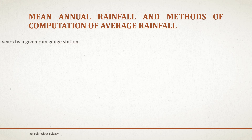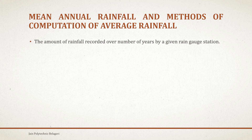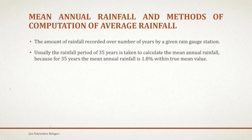We will be discussing how to calculate it in this video. The amount of rainfall required over a number of years at a given rain gauge station is noted down. Usually, a rainfall period of 35 years is taken to calculate the mean annual rainfall, because this 35-year mean annual rainfall is within 1.8 percent of the true mean value.